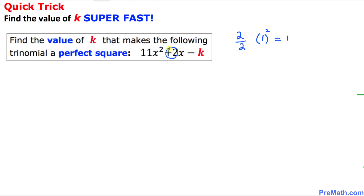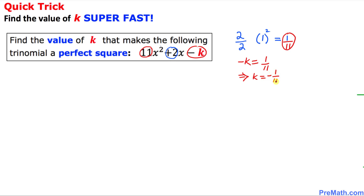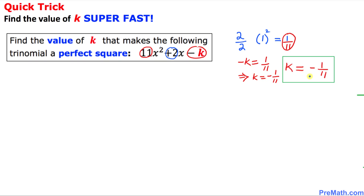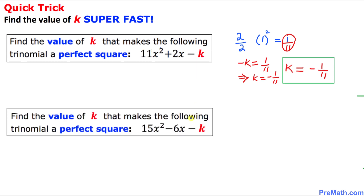Now let's focus on our leading coefficient, which is 11. We are going to divide the 1 we got by the leading coefficient 11, giving us 1 over 11. Here we have negative k in our trinomial, so we set negative k equal to 1 over 11. That tells us that k is simply negative 1 over 11.